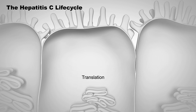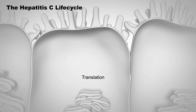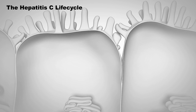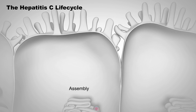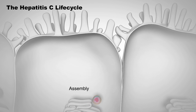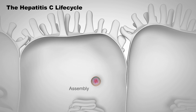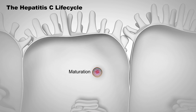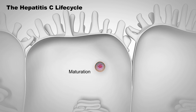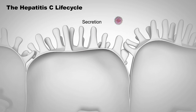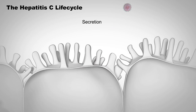Several steps are fundamental for HCV to infect a cell, replicate, and then release to infect other cells. Each of these steps is a potential target to interrupt replication, rendering this virus inactive.